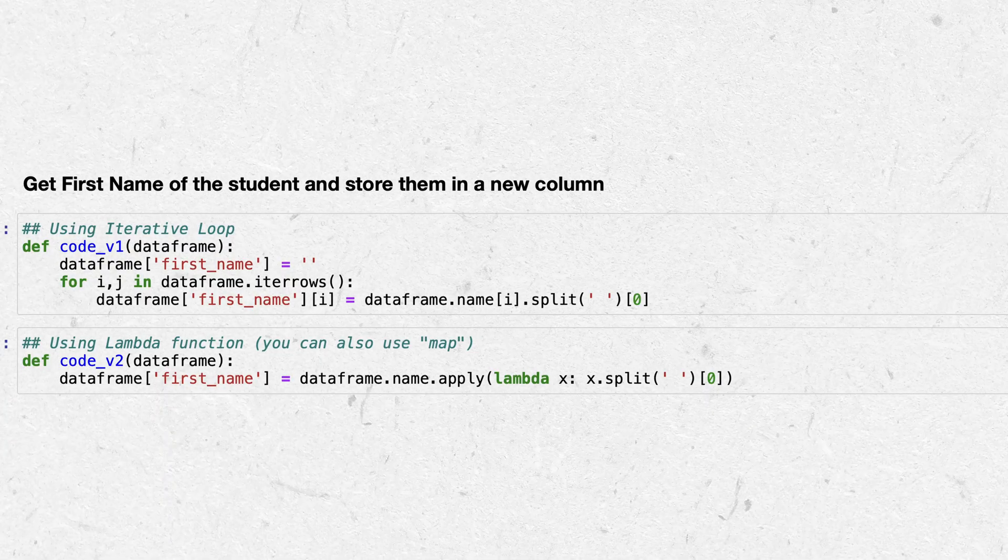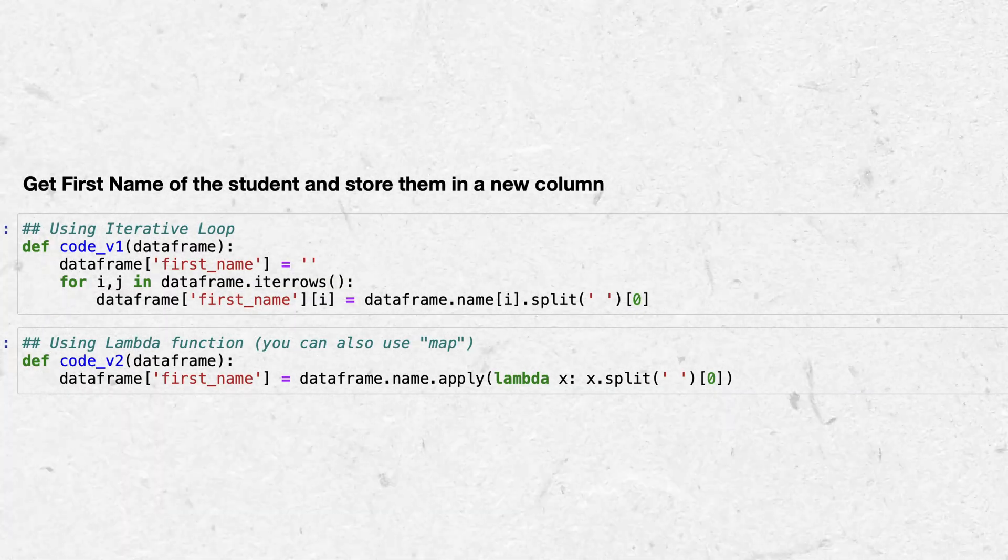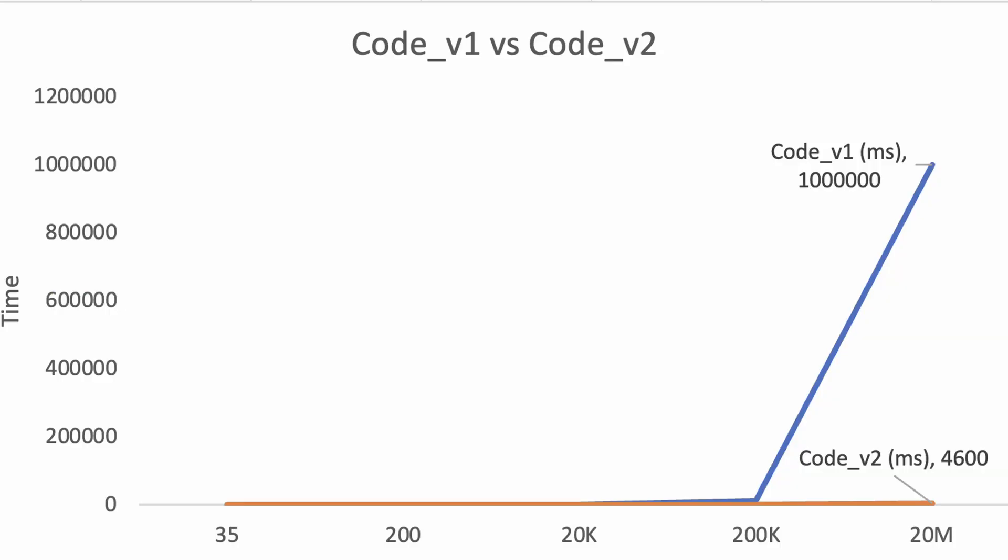Let's look at two versions of code. The objective is to find the first name of students in a class. Code one uses a for loop; code two uses an apply or map function — the faster version. Testing on datasets of 35, 200, 20,000, 200,000, and 20 million students, the runtimes are poles apart. From 35 to 20 million rows, the second code still takes a maximum of four seconds. That is scalability.